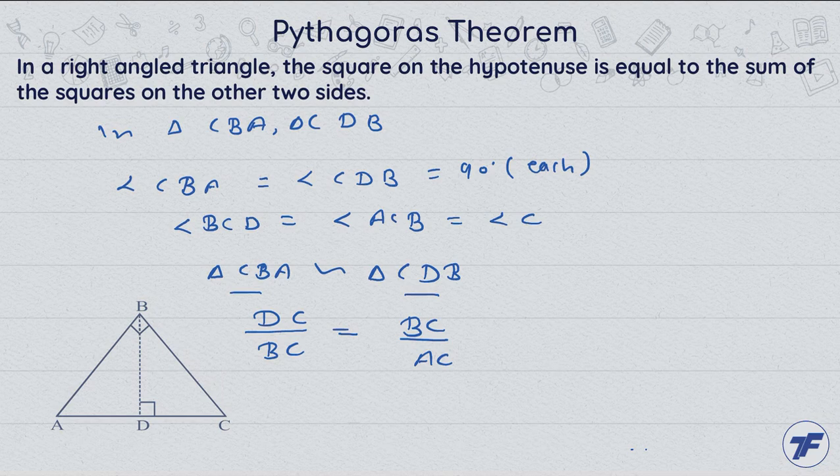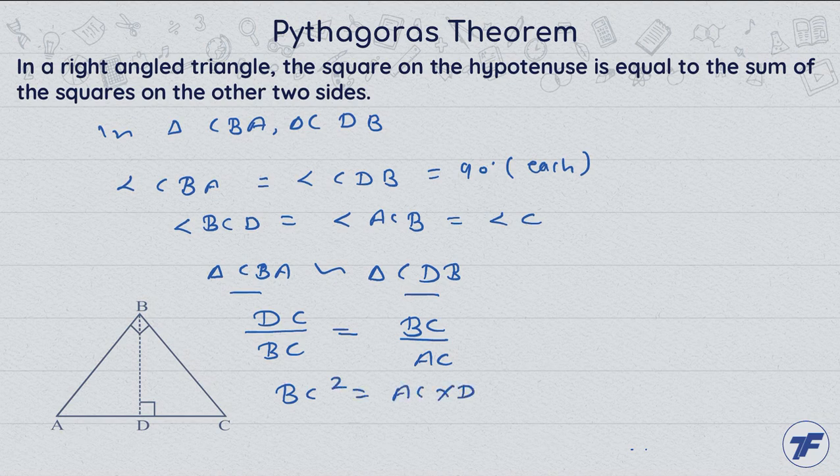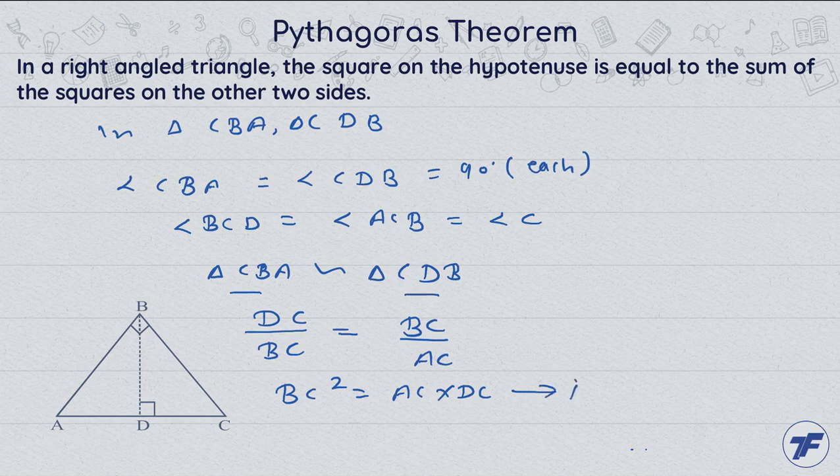Cross multiply. BC squared equal to AC into DC. This is our second equation.